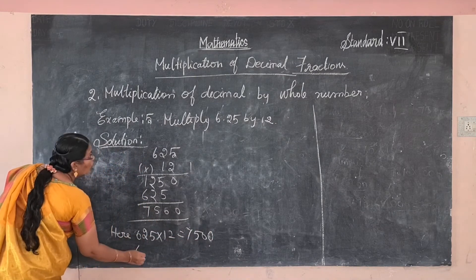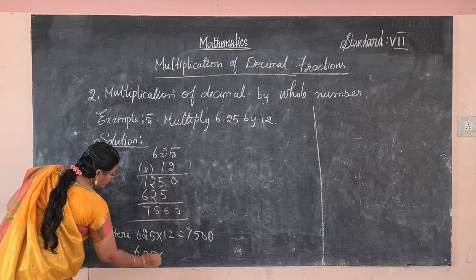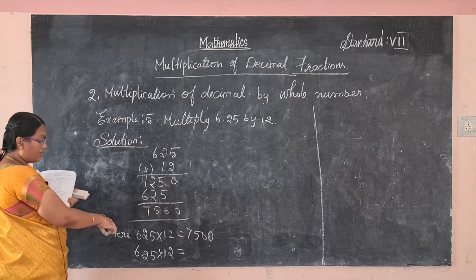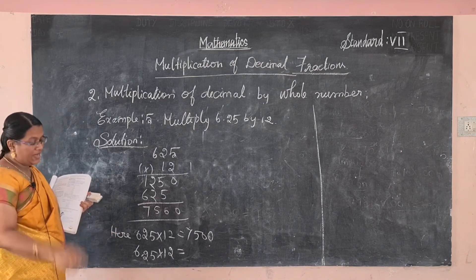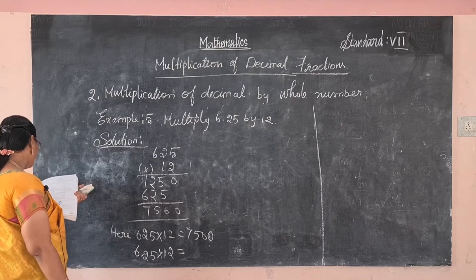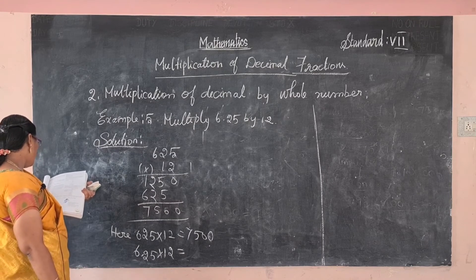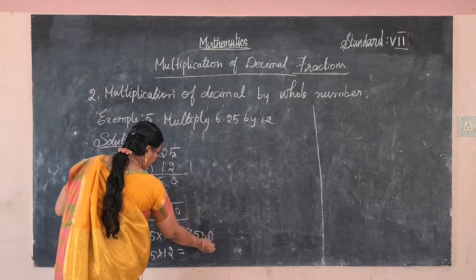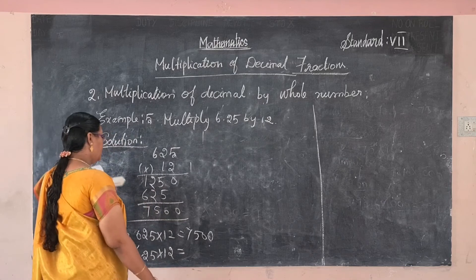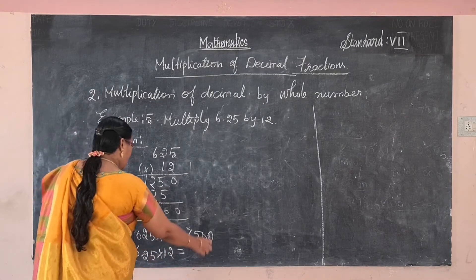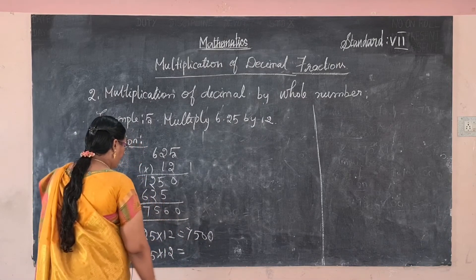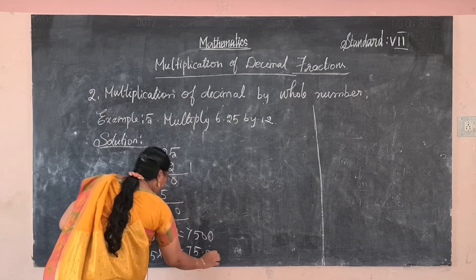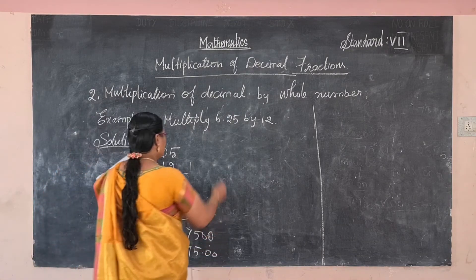We need 6.25 into 12. How many decimal places after the decimal point? Two places. So from the right side, put the decimal point two places in. The answer is 75.00.